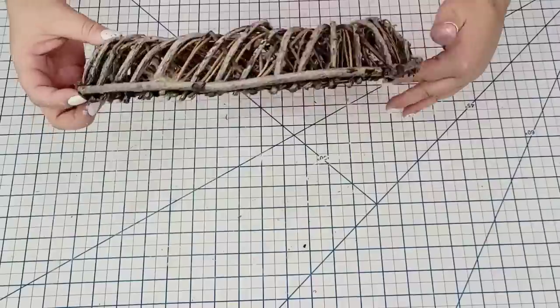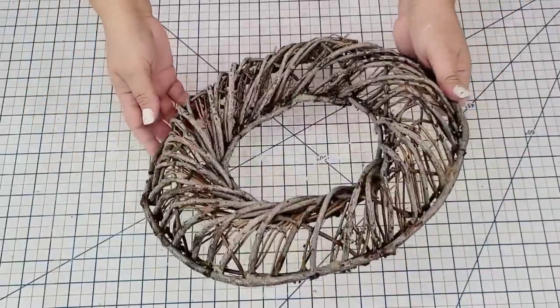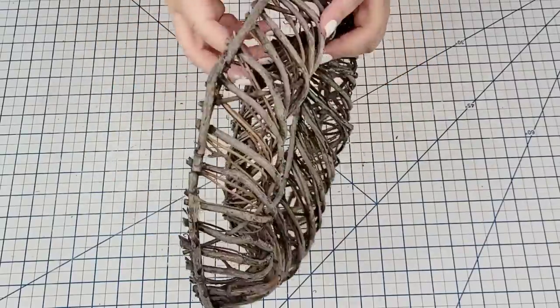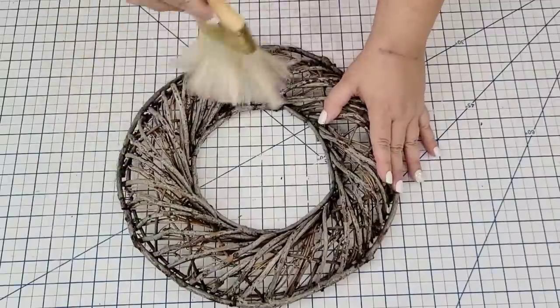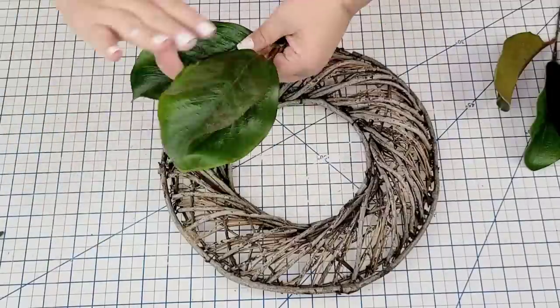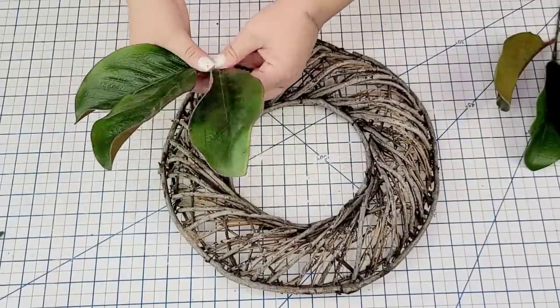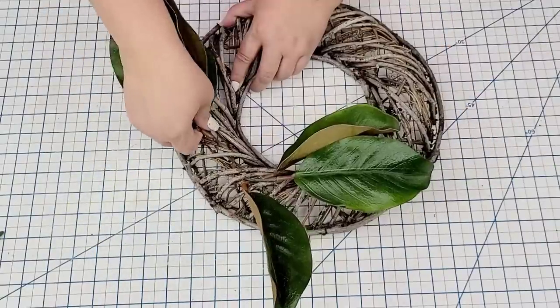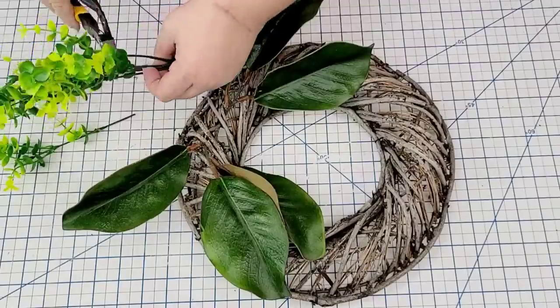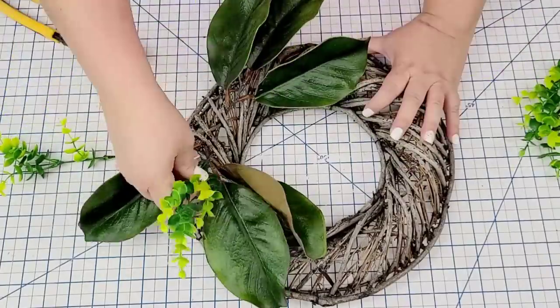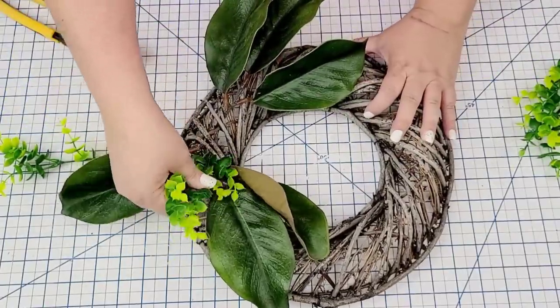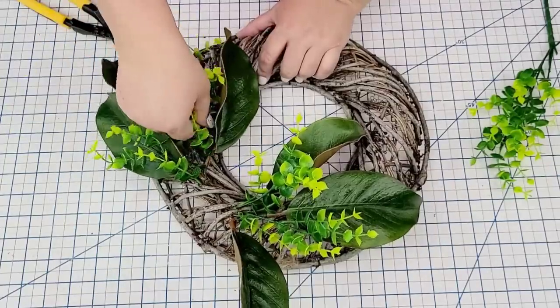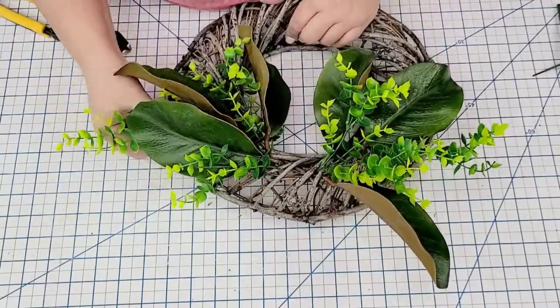While the window dries, I'm going to take this thrifted wreath. Now this wreath form is gorgeous, it has like a wire form and then they covered it in this beautiful grapevine style. I thrifted it a while ago and I just want to give it a new look for Valentine's Day or maybe even spring. I'm going to take these magnolia leaf little picks that I have, I've had them for so long. I put one to the top right and then another one to the bottom right. Then I'm going to take some of these boxwood that I get from Amazon and I'm just going to place them here and there just to fill it in.